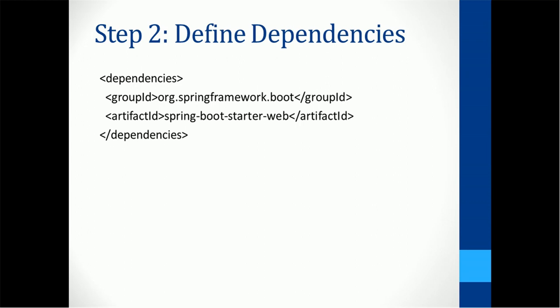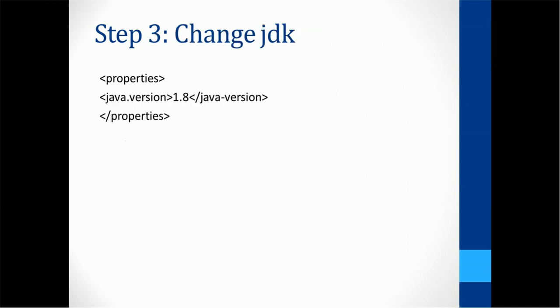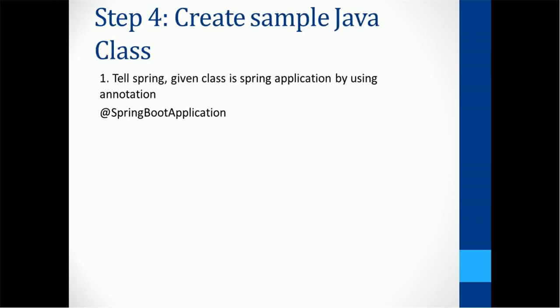The third step is configuring the proper JDK version. The current stable version is 1.8. The fourth step is to create a simple Java class and annotate it with @SpringBootApplication, so that Spring Boot understands this class is a Spring Boot application and will use it to start the application.